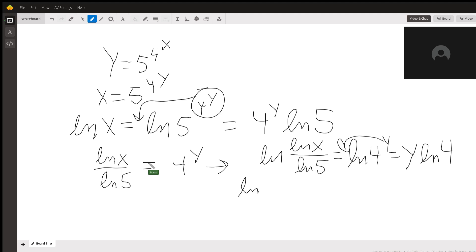Log of natural log of x over log of 5 divided by the natural log of 4 equals y. So there's the answer. The inverse function is the log of natural log of x over the natural log of 5 divided by the natural log of 4.